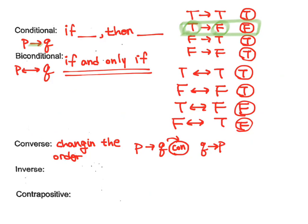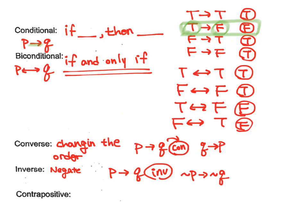Inverse is the negation. So if I have P then Q, the inverse of that would be: not P implies not Q. We just put the negation in.